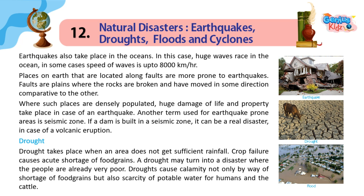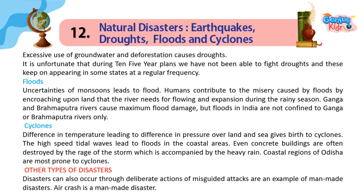Drought: Drought takes place when an area does not get sufficient rainfall. Crop failure causes acute shortage of food grains. A drought may turn into a disaster where the people are already very poor. Droughts cause calamity not only by way of shortage of food grains but also scarcity of potable water for humans and cattle. Excessive use of groundwater and deforestation causes droughts. It is unfortunate that during ten five-year plans, we have not been able to fight droughts, and these keep appearing in some states at a regular frequency.